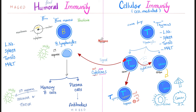The T-lymphocytes could be T-helper, CD4, or T-cytotoxic, CD8. The cluster of differentiation is like your identification card — it's how you recognize the type of lymphocyte. The T-cytotoxic is cytotoxic — toxic to cells. It is toxic to fungi, virus-infected cells, and cancer cells.